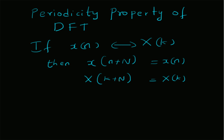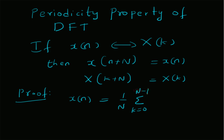So let us look at the proof for this periodicity property. From the definition of the IDFT, that is, inverse DFT, we have x of n is equal to 1 by N, summation k equal to 0 to N minus 1, X of k, e power j 2 pi n k by capital N.